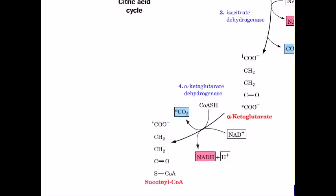Alpha-ketoglutarate is converted to succinyl-CoA by alpha-ketoglutarate dehydrogenase in reaction 4 with the release of carbon dioxide. The carbon dioxide released in this reaction is the one marked with a star.